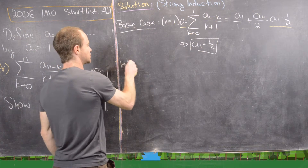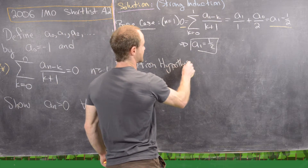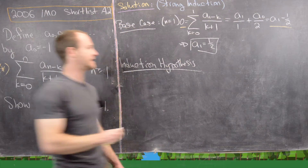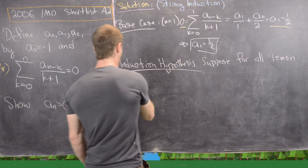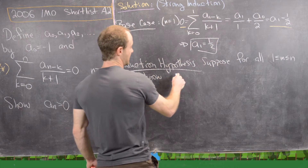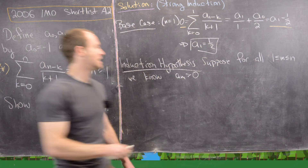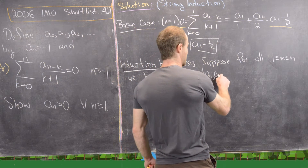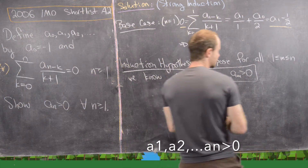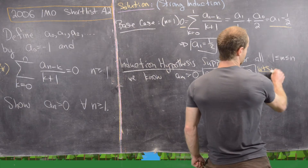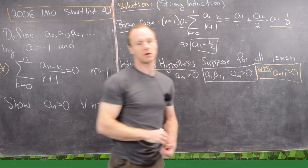Now let's take our strong induction hypothesis. Suppose for all m between 1 and n, we know that aₘ is greater than zero — that is, a₁, a₂, all the way up to aₘ are greater than zero. What we want to show to complete the argument is that a_{n plus 1} is greater than zero, which will finish the strong inductive argument.